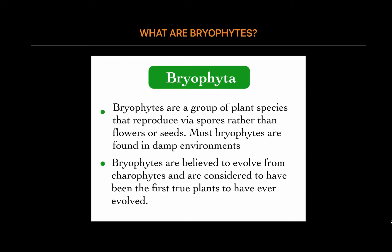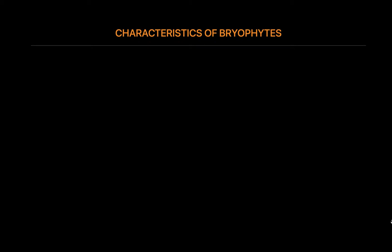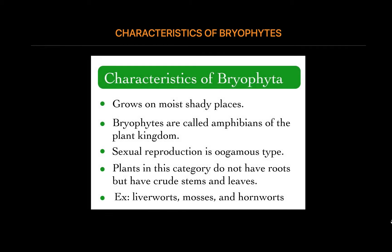The process by which they produce spores is termed alternation of generations. Bryophytes are primitive land plants that grow on moist, shady places. They prefer moist, cool, and shady places to grow. Few of them grow in water and others in bogs, moist walls, and rocks.